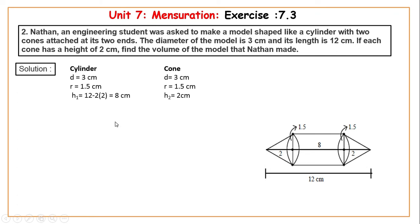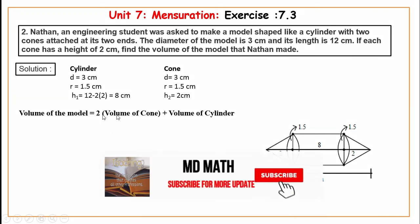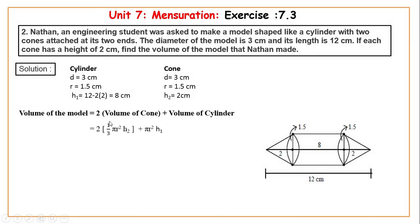The volume is the total volume: 2 times the volume of cone plus volume of cylinder. Volume of cylinder is pi r squared h1. And the two cones have radius r, so the two radius are the same.